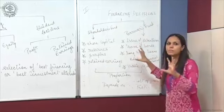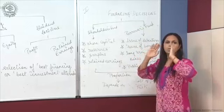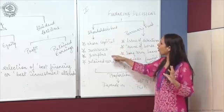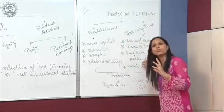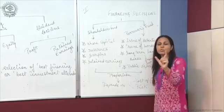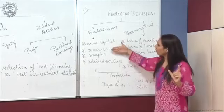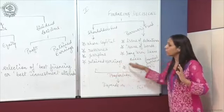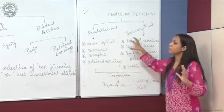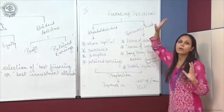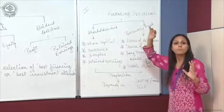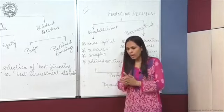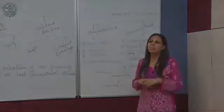The financing decision is basically finding out the ratio in which the amount will be raised from all these available sources. We have to find out the proportion — a ratio between these two major types of sources of raising fund — and that proportion or ratio actually depends on the cost.